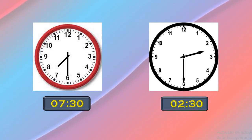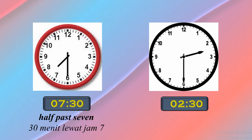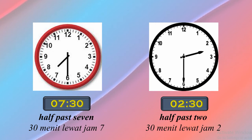Let's practice reading clock time with the second way. Cara kedua: menyebutkan menit dulu, kemudian jamnya. Contoh: jam 7:30 disebut 'a half past 7', artinya 30 menit melewati jam 7, atau dalam bahasa Indonesia jam 7 lewat 30 menit. Jam 2:30 disebut 'half past 2', artinya 30 menit atau setengah jam melewati jam 2, atau jam 2 lewat 30 menit. Jadi, pada cara kedua ini, yang kita sebutkan adalah menitnya dulu, kemudian jamnya.